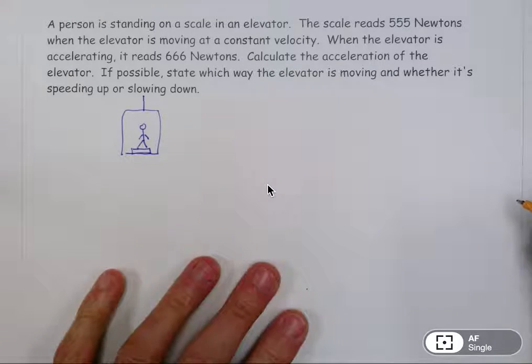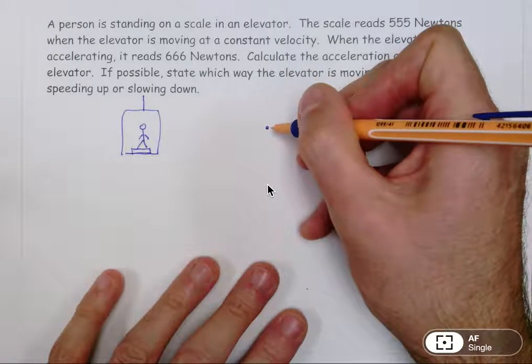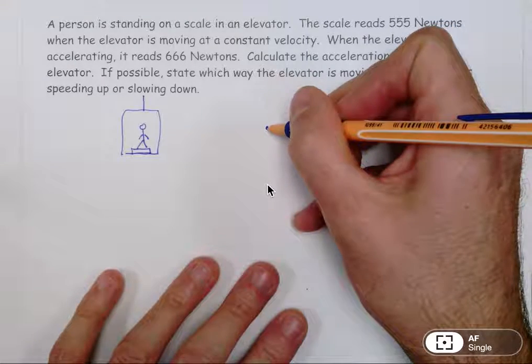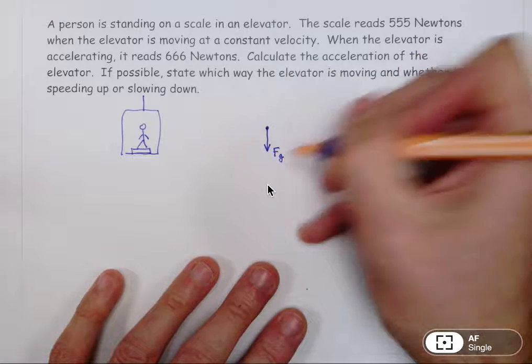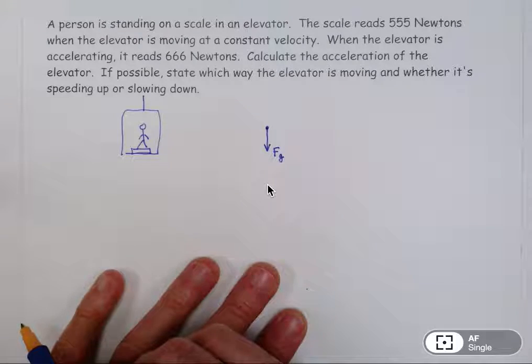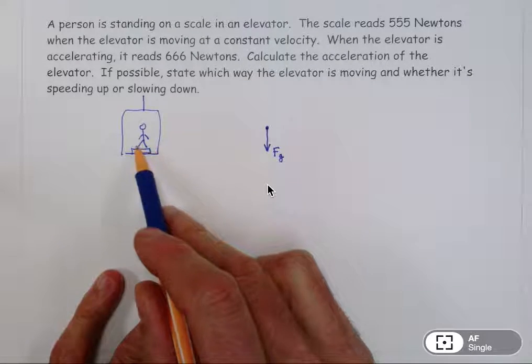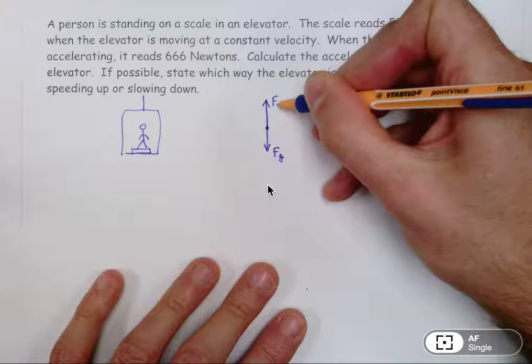When it's a force type problem, you should always draw a free body diagram. So let's do that. If you think about the forces that the person is feeling, of course the earth always pulls downward on us. That's the force of gravity or the weight. And then anything that touches the person is going to exert a force on the person. The only thing touching the person is the scale. So the scale is going to push up. You can call that F scale.